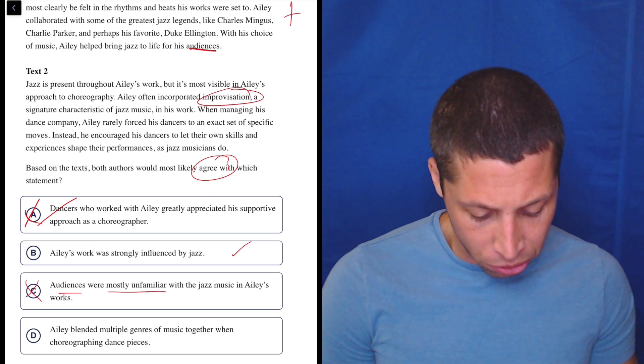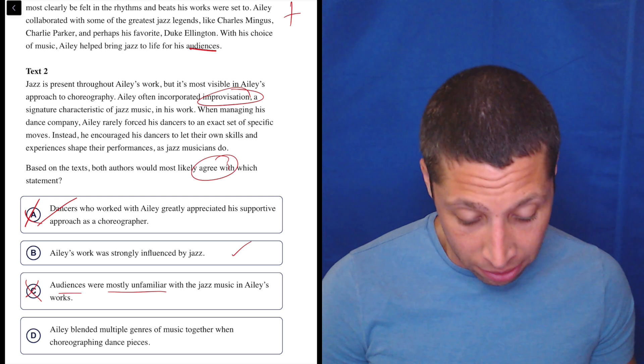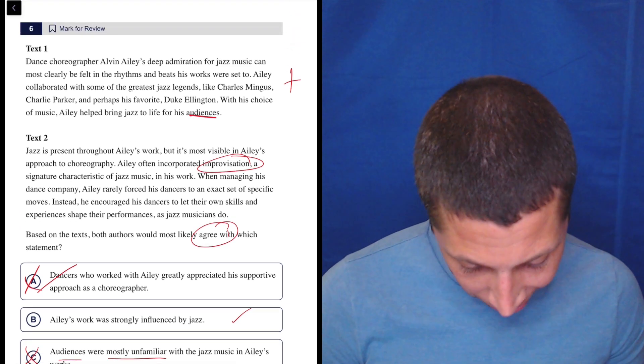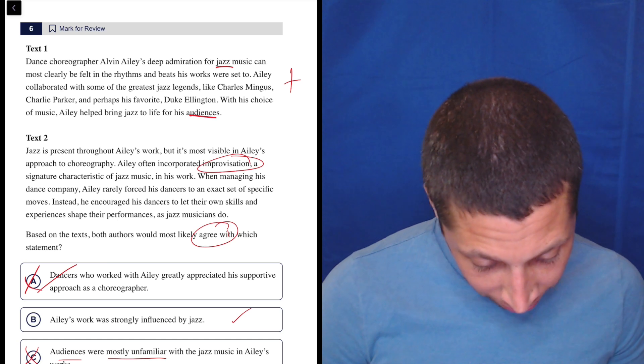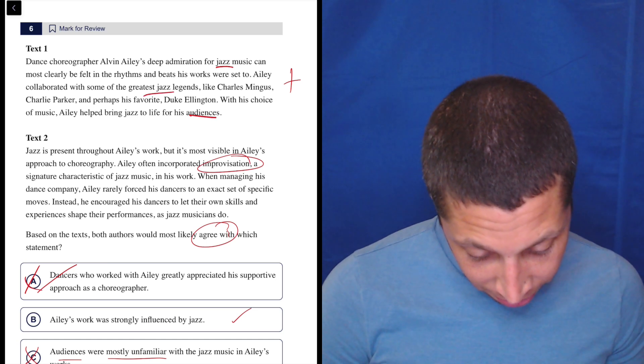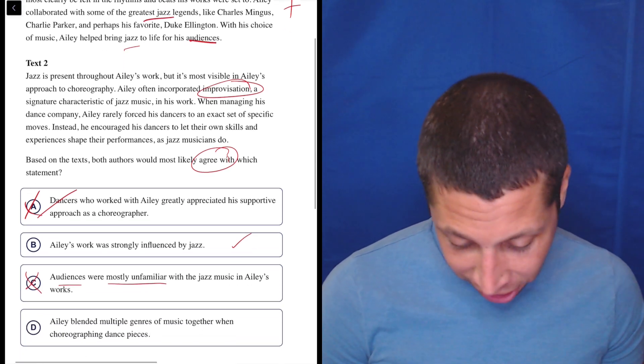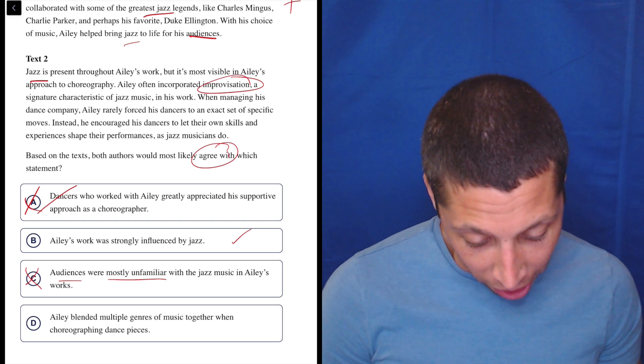D: Ailey blended multiple genres of music together when choreographing dance pieces. Okay, let's see. There's jazz music, jazz legends. Jazz is present, but it's most visible in its choreography.